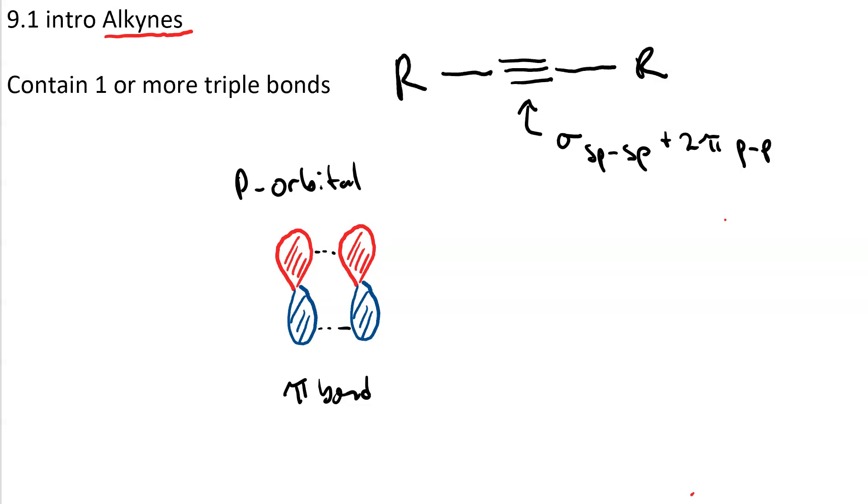Now, let's say these two p orbitals that are overlapping are px orbitals. Well, you can also have py orbitals. And here's what a py orbital would look like. Py orbitals can overlap in the same way to give another pi bond.